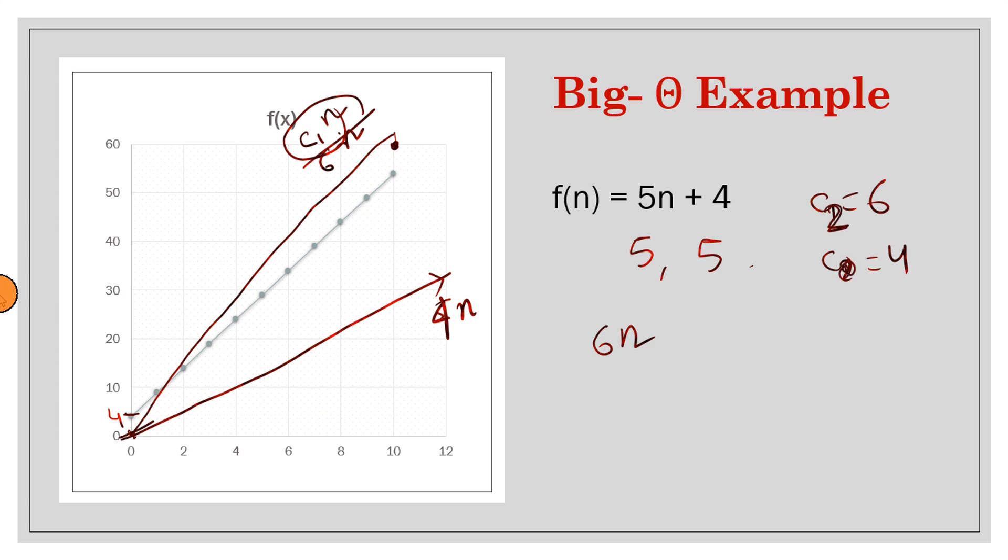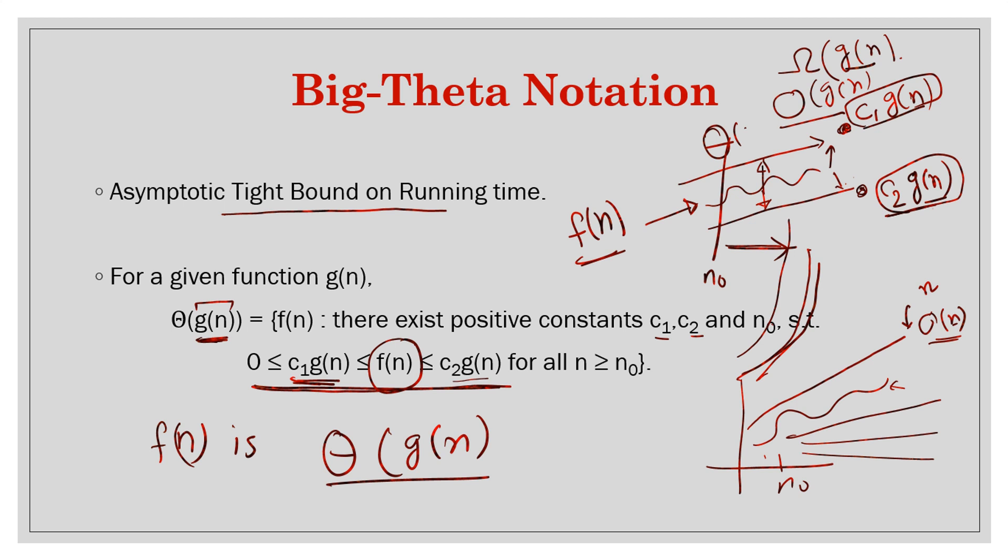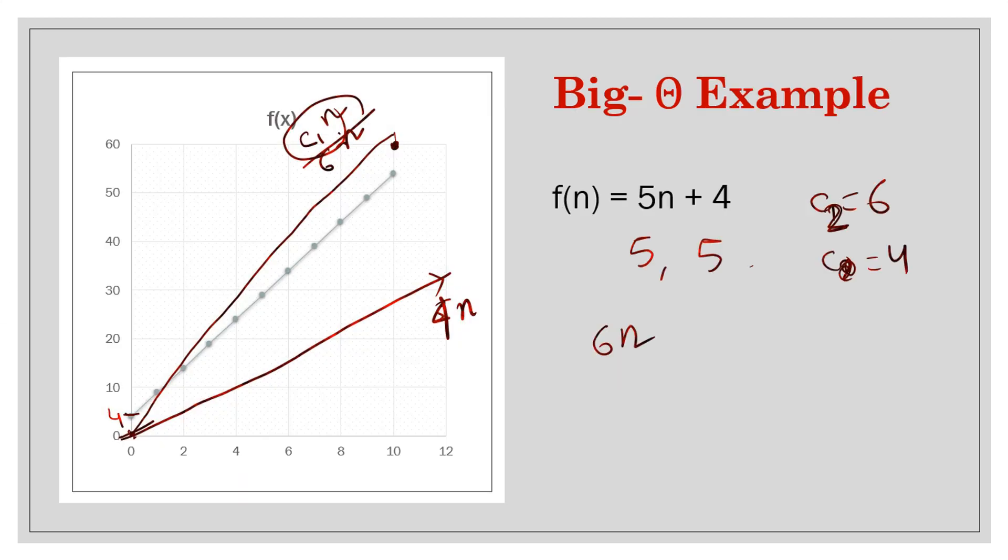So you get two constants: c₁ is 6, c₂ is 4. Or I have reversed the order, so let's say c₂ is the larger one - let's be consistent here - or c₁ is 4. So 4n is always less than or equal to 5n + 4, is always less than or equal to 6n.